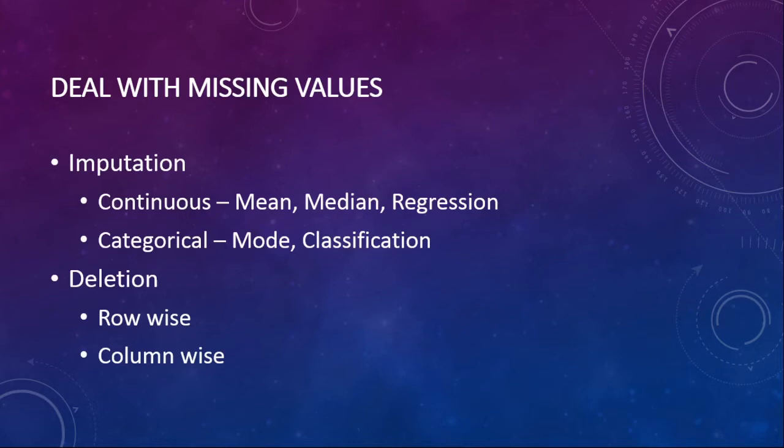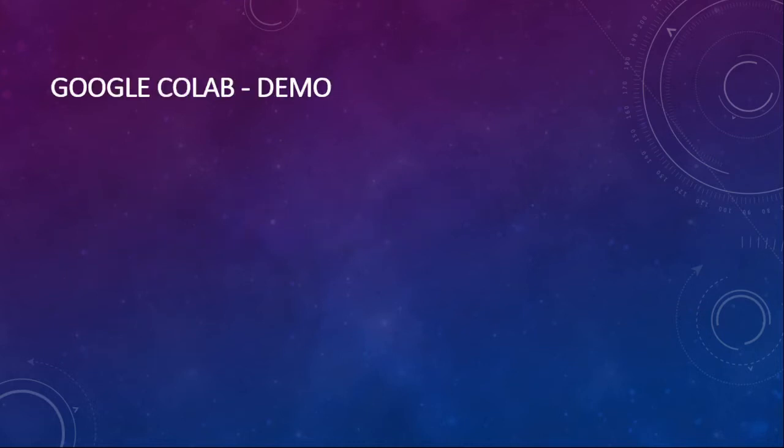Deletion means row-wise or column-wise — if there is any missing value in a single row we delete the complete row, and if any cell is missing in a column we cut that complete column. Now, which method is best — imputation or deletion? Imputation is better because with deletion we lose a lot of data, meaning we can't analyze the data properly. Let's flip to Google Colab to explore this.